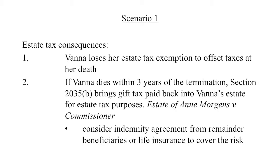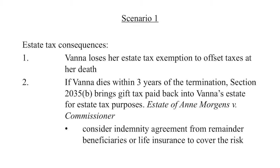On estate tax consequences: in making the gift, she used her lifetime exemption, which won't be available to offset transfers at her death. The three million dollars of gift tax reduced the amount of the gift, but Section 2035(b) brings gift taxes paid on gifts made within three years of death back into the gross estate. So you may want to plan for that — perhaps a three-year term life insurance policy or some form of indemnification from the remainderman.